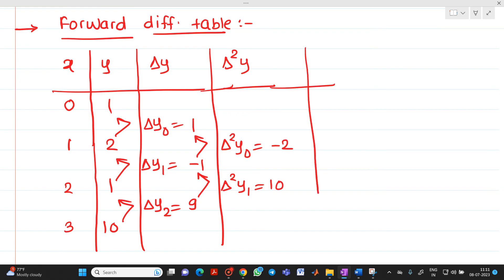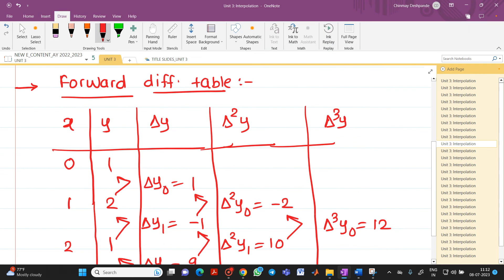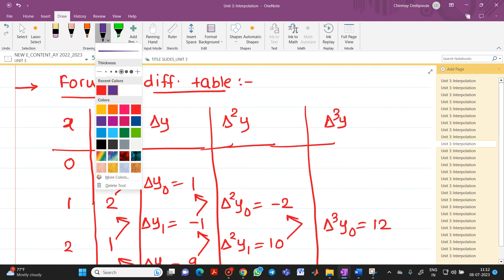And if you see here, next is del cube of y. So it will be equal to what? Del cube of y0 equal to 10 minus of minus 2, which is equal to 12. So here if you observe, we will have these values.